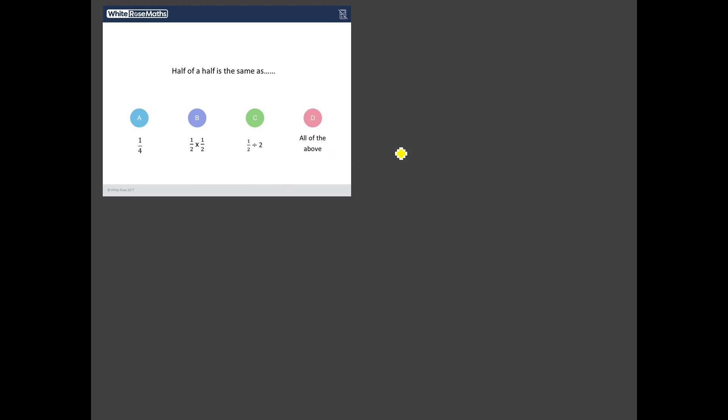We've got one half of one half and we need to figure out what that is equal to. Now, we've got three options, but we've also got an all of the above option. It's always worth scanning the answers because when we see all of the above, that means we've got to check each option to see if all of them are correct. So let's start with this one. Is a half of a half equal to a quarter?